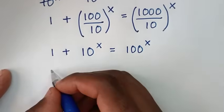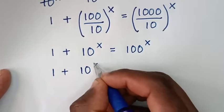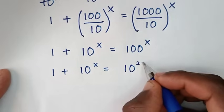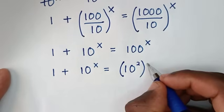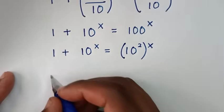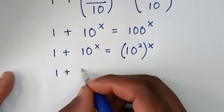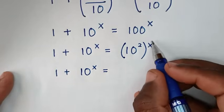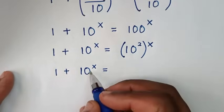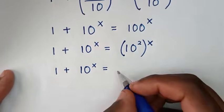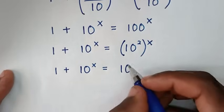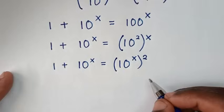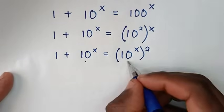Then we take the power of x inside the bracket and power of 2 outside the bracket, so it reads 1 plus 10 power of x is equal to (10 power of x) squared. In this equation, 10 power of x is common.